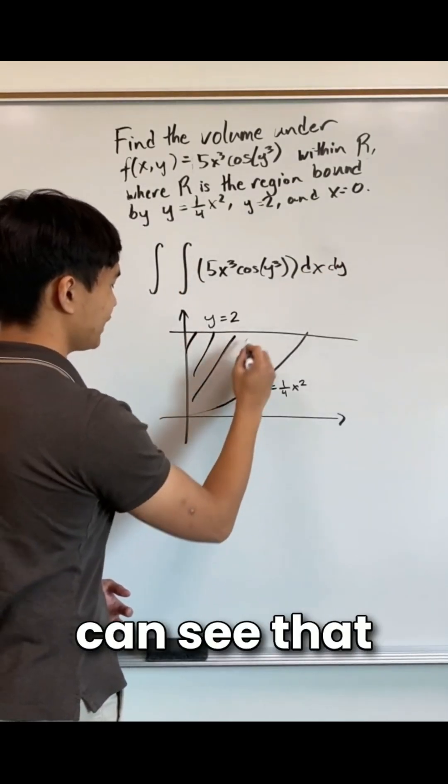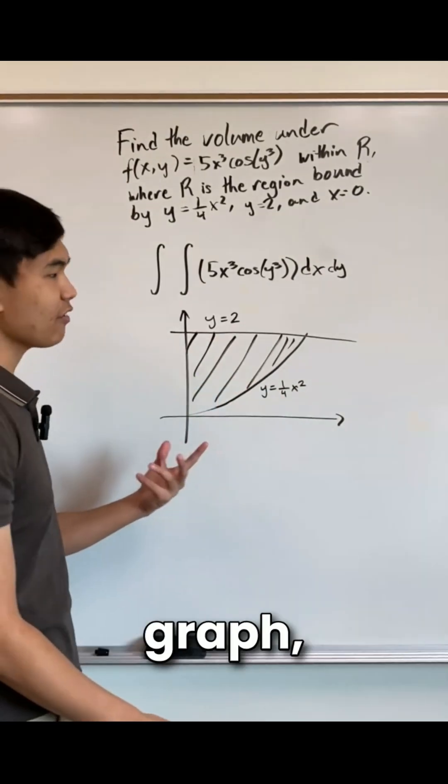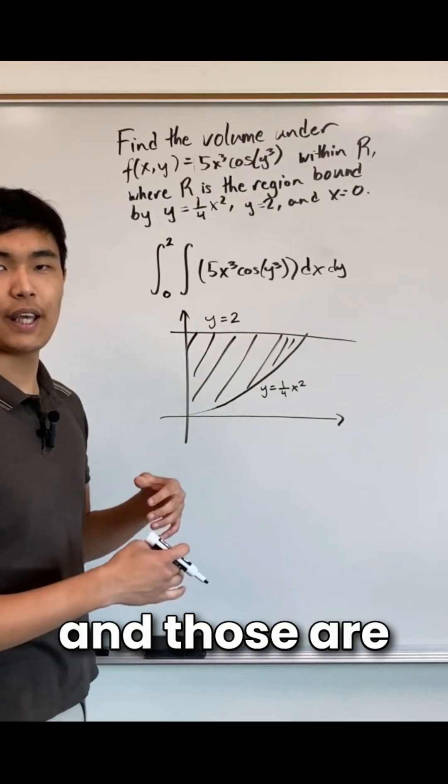Drawing out the region r, we can see that it's this area enclosed by this curve and this line. From the graph, we can easily tell that our y bounds of integration are going to be from 0 to 2, and those are set.